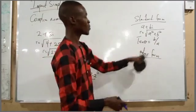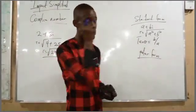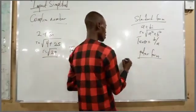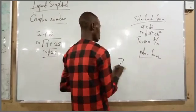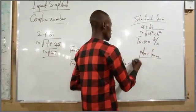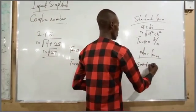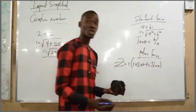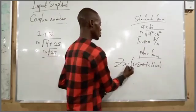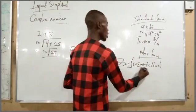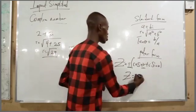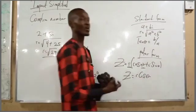Now mixing this with polar form: the polar form of a complex number is denoted as Z, and the formula is Z equals R(cos θ plus i sin θ). We know R as the magnitude and θ as the direction.